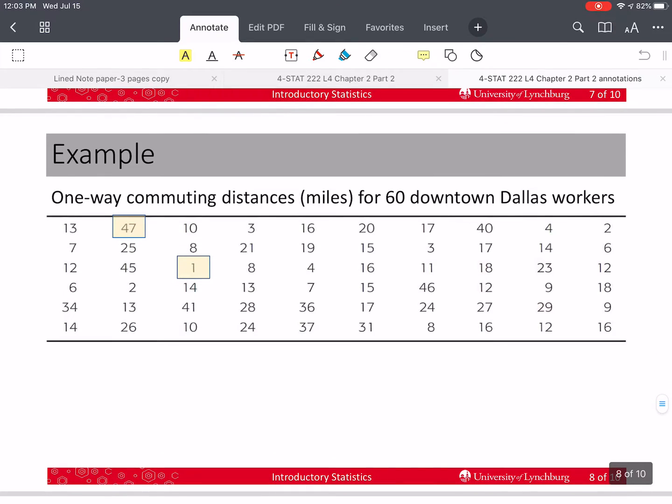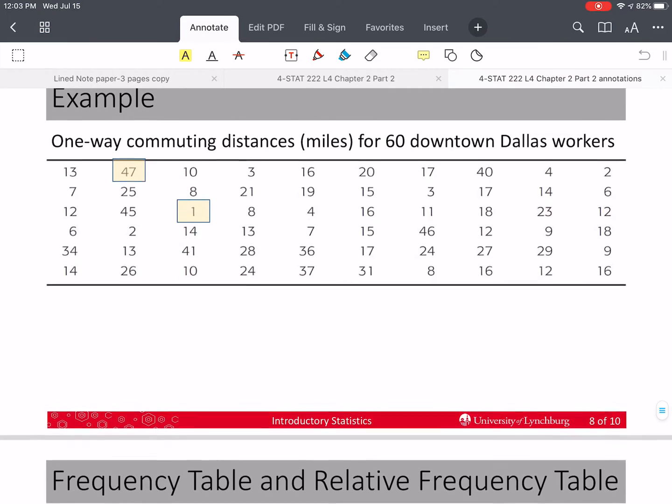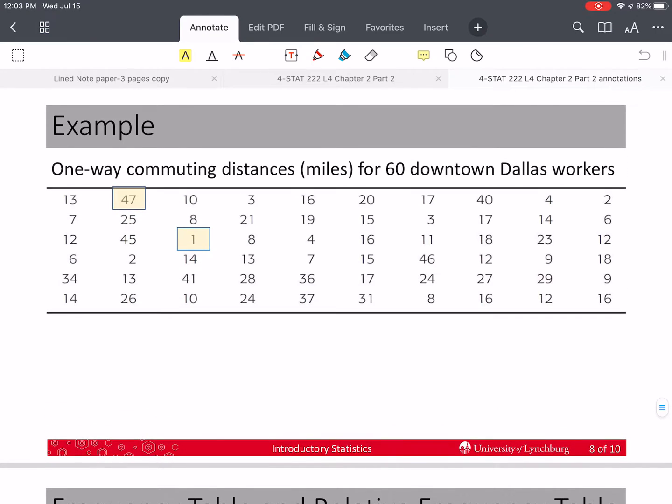Here's our example. We've got these distances in miles for one way of commuting for people that work in Dallas, Texas downtown Dallas, Texas. So the first thing that we need to do here is we need to decide how many classes we're going to have for the data set.